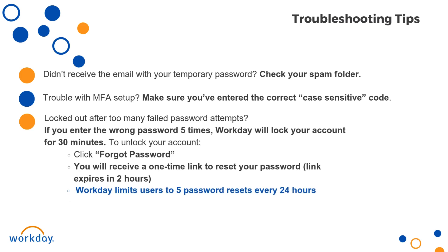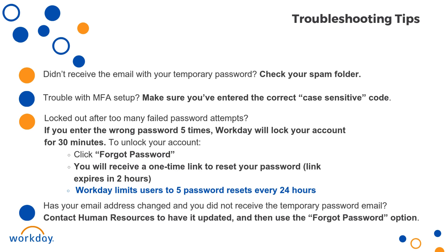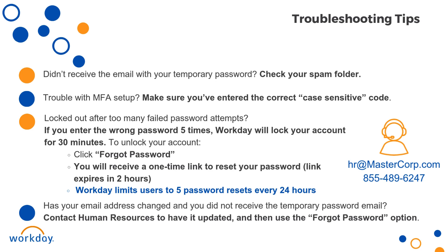Workday limits users to five password reset requests in a 24-hour period. Has your email changed and you did not receive the temporary password email? Contact Human Resources to have it updated before using the Forgot Password option. If you are still locked out despite resetting your password, please reach out by sending an email to hr@mastercorp.com or call 855-489-6247. For any further questions or issues other than an account lockout, please contact your HRBP.